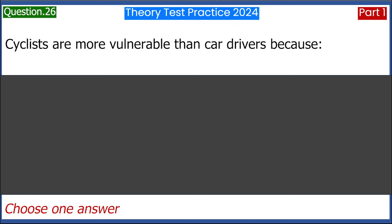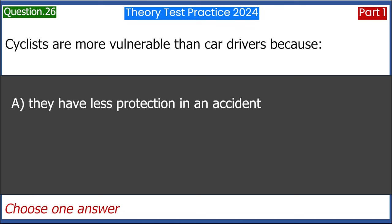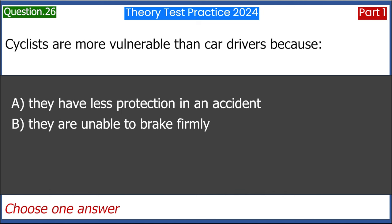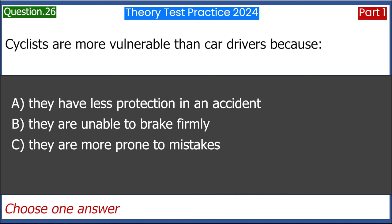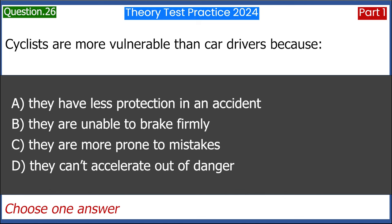Cyclists are more vulnerable than car drivers because: A. They have less protection in an accident. B. They are unable to brake firmly. C. They are more prone to mistakes. D. They can't accelerate out of danger. Answer: A. They have less protection in an accident.